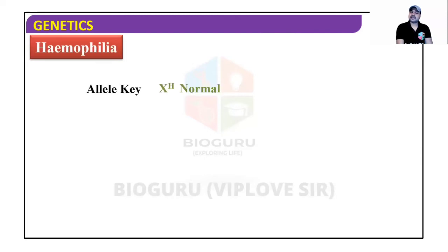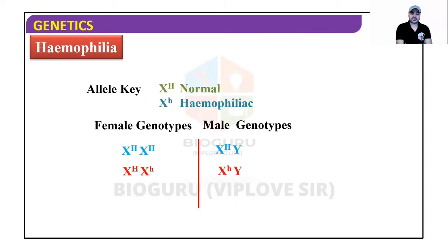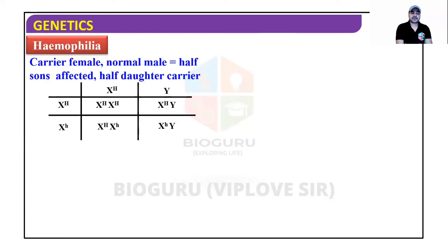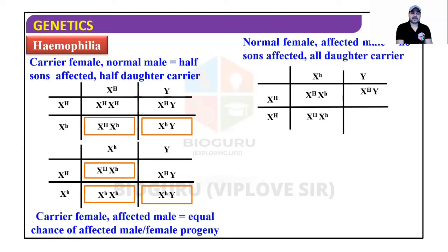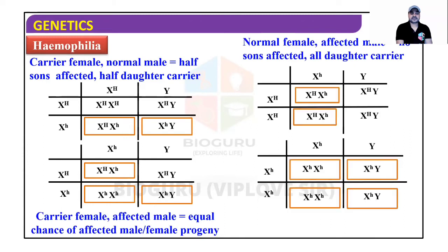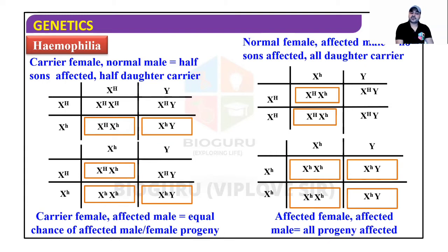For hemophilia alleles: X^H is normal and X^h is hemophilia. There are four cases in crosses: (1) carrier female × normal male — half sons affected, half daughters carrier; (2) normal female × affected male — no sons affected, all daughters carrier; (3) carrier female × affected male — equal chance of affected male and female progeny; (4) affected female × affected male — all progeny affected.